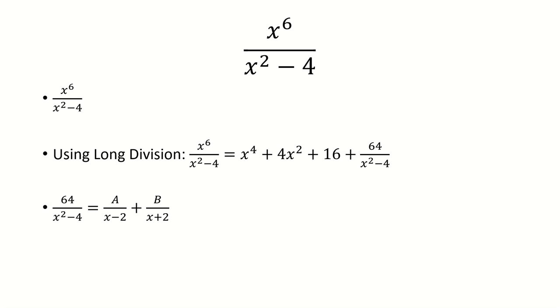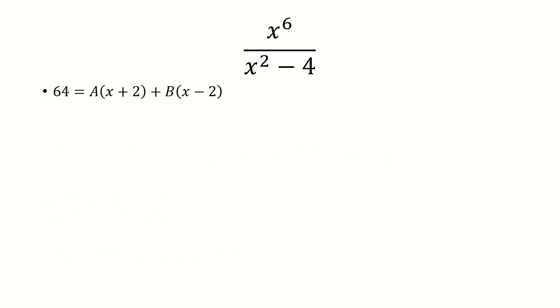We'll multiply both sides by x squared minus 4, and that's going to cancel the denominators. So now we're just going to plug in values for x to solve for A and B.